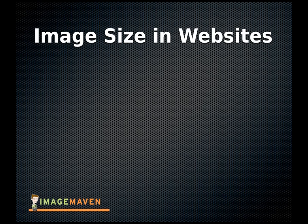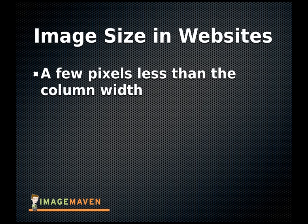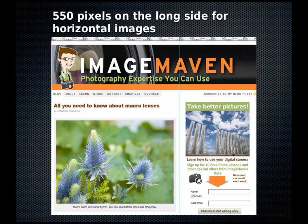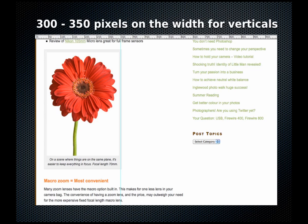What about image sizes in websites? I recommend making your image size a few pixels less than the width of the column. For example, you might have a website that's 900 pixels wide with two columns in a one-third, two-third split, so images of 300 or 600 pixels could fill those columns. In practice, I recommend making your images slightly smaller than the column width — you want a little breathing room, and when you add captions it adds a frame around your image, so you need to leave room for that. If your image is larger than the column, it'll overlap into other columns. For vertical images on websites, I recommend between 300 and 350 pixels wide so it's still large enough to see the detail.